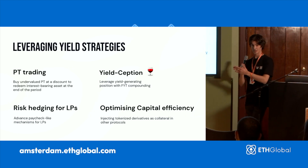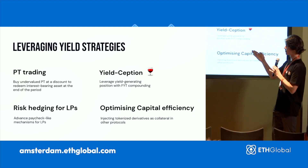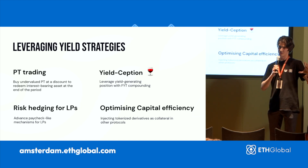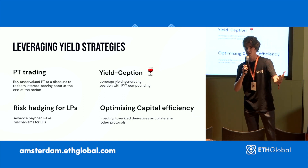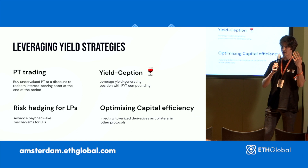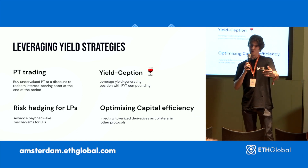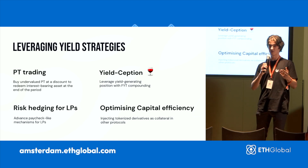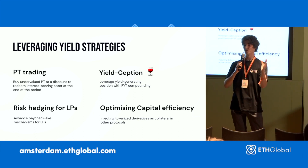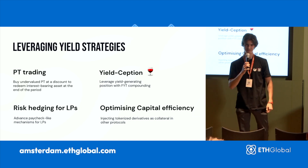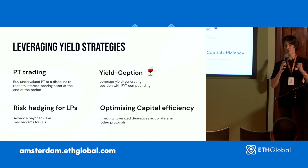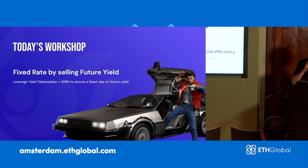Here are a few strategies you could build at this hackathon. First is PT trading. Remember that the PT is the value of the initial deposit, so you know that at the end of each period — like at the end of each year — one PT is always going to be equal to one DAI, or whatever you deposited. Using this simple fact and the discount on our automated market maker, you can basically buy PT at a discount. Let's say you buy a PT for 0.9 DAI instead of one DAI — you make 10% APY at a fixed rate, because you know for sure at the end of the year it's going to be a one-to-one ratio. You also have yield exception strategies to compound your yield ahead of time, which is something that's only possible with future yield.